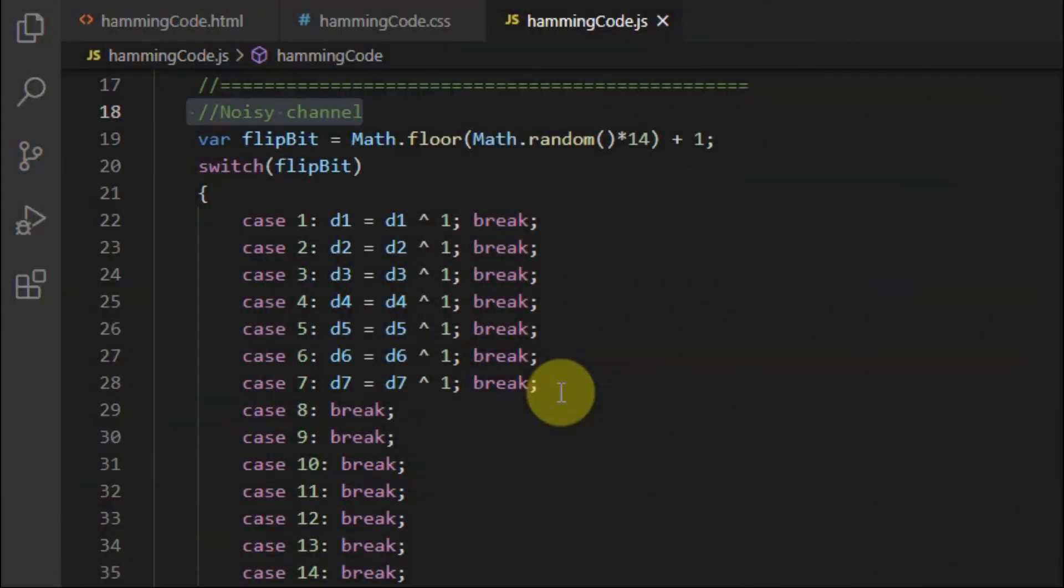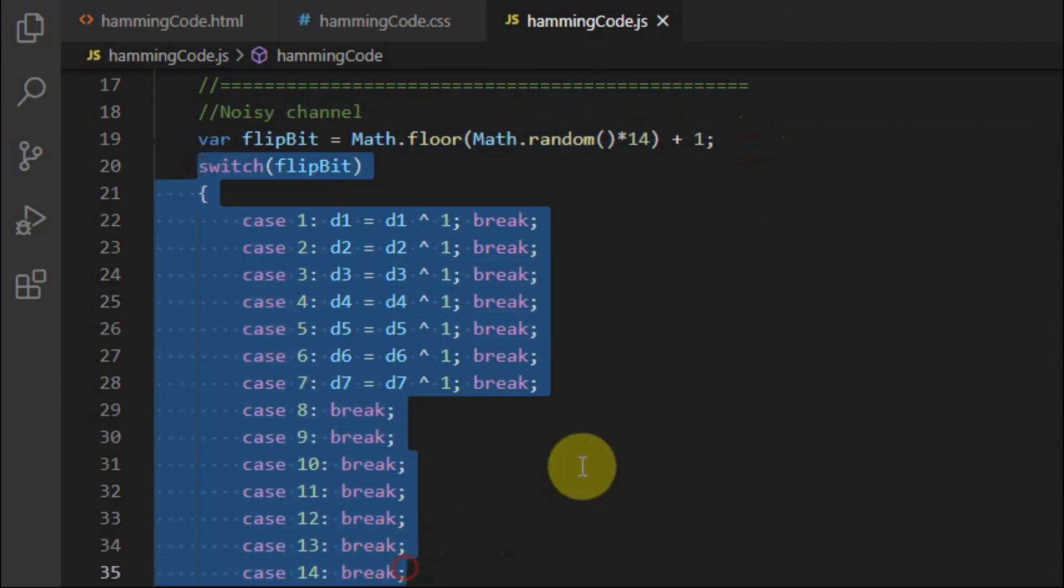The codeword is then sent over the noisy channel, which has a probability of error of 0.5, and this is achieved by using the rand function here and the switch statement.